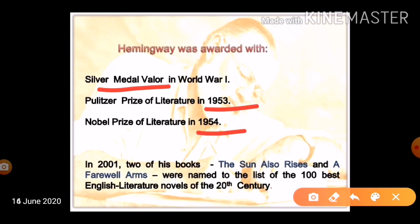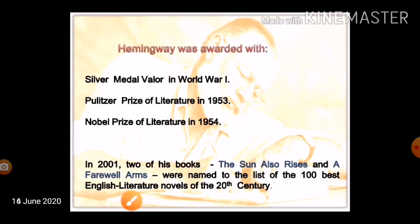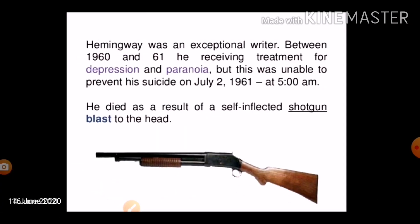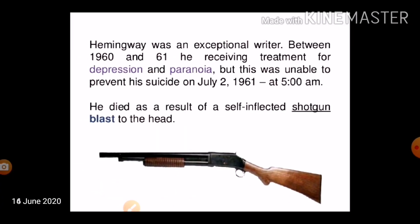Two of Hemingway's books — 'The Sun Also Rises' — were listed among the 100 best English literature works of the 20th century. Hemingway was undoubtedly an exceptional writer of his period.